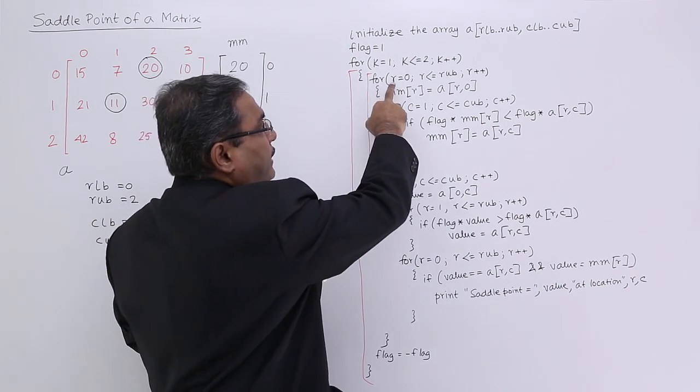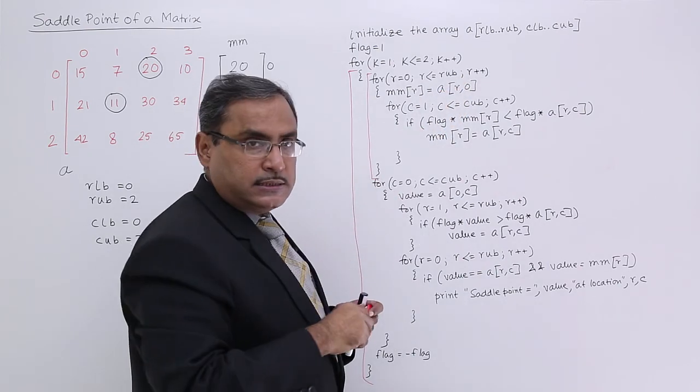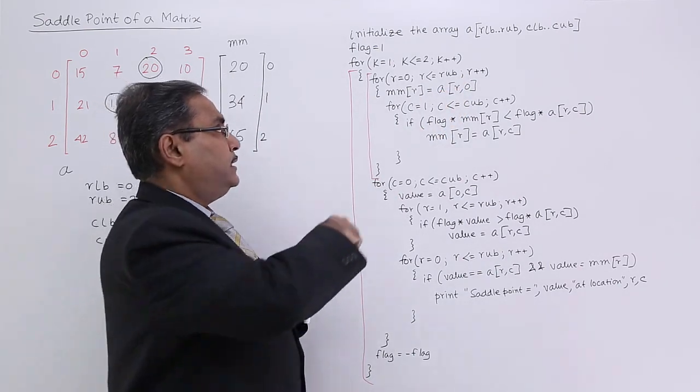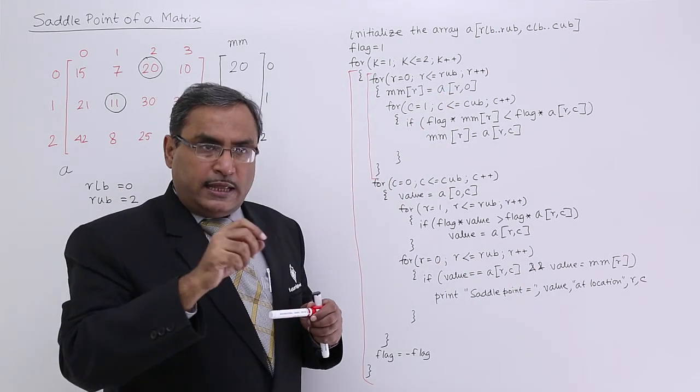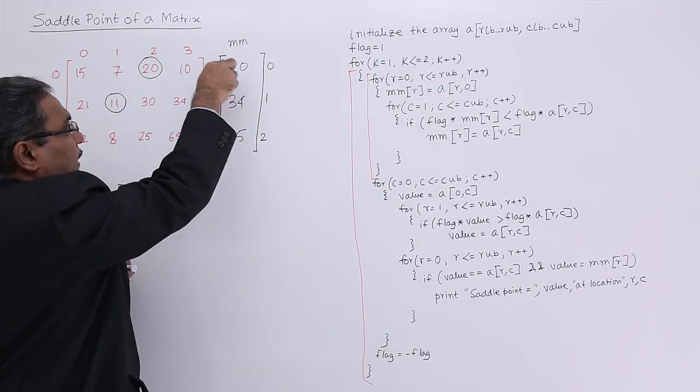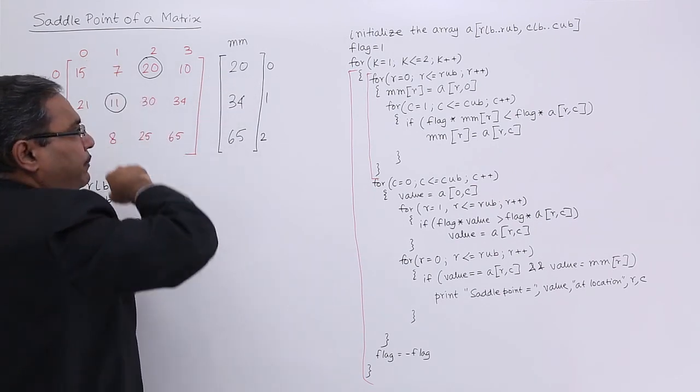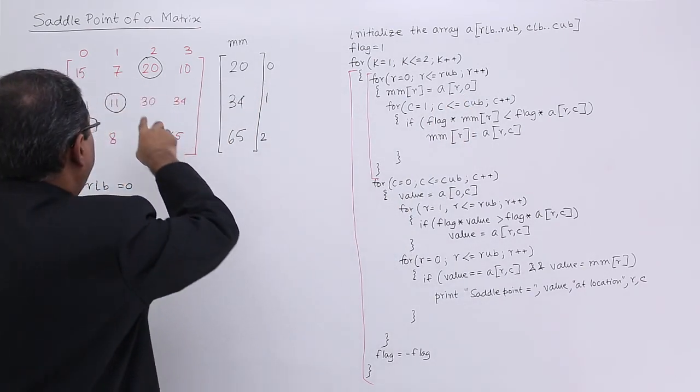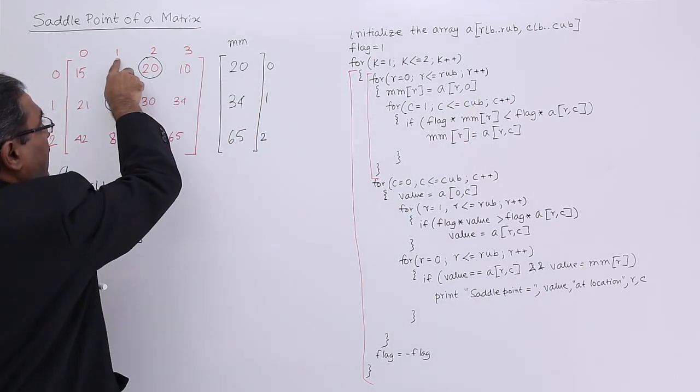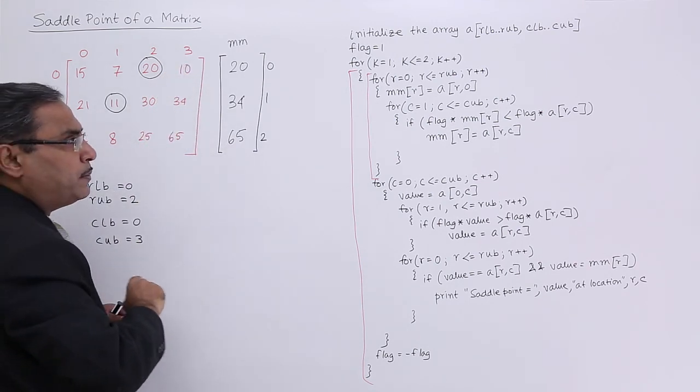For r is equal to 0, r less than r upper bound, r plus plus. That means for each and every row, I am going for this. mm r is equal to a r 0. That means the first data I am putting in mm. The first data is at the column number 0. Then I shall compare with the rest columns, so here the column number will be 1 to column upper bound.